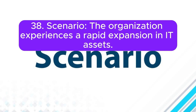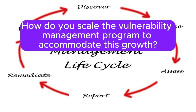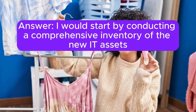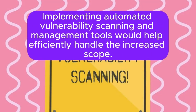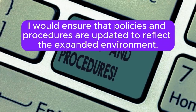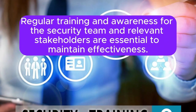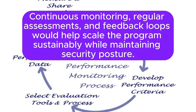Scenario 38: The organization experiences a rapid expansion in IT assets. How do you scale the vulnerability management program to accommodate this growth? I would start by conducting a comprehensive inventory of the new IT assets to ensure they are included in the vulnerability management program. Implementing automated vulnerability scanning and management tools would help efficiently handle the increased scope. I would ensure that policies and procedures are updated to reflect the expanded environment. Regular training and awareness for the security team and relevant stakeholders are essential to maintain effectiveness. Continuous monitoring, regular assessments, and feedback loops would help scale the program sustainably while maintaining security posture.